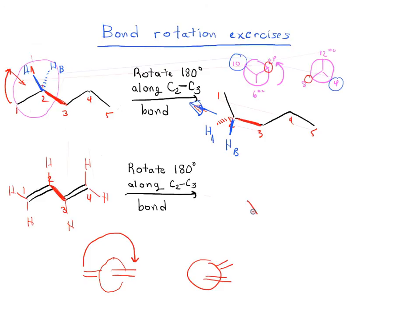We've got our hinge here. Rotating carbon 1 — you'd get the same answer rotating carbon 4, it doesn't really matter. The result is in the plane of the page: C4, C3, C2, and C1. Now both alkenes are on the same side of the C2-C3 bond, whereas before the alkenes were on opposite sides of the C2-C3 bond.